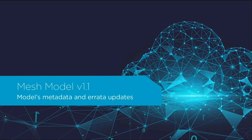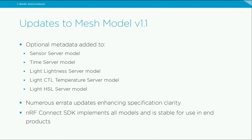Looking at updates in Mesh model specification version 1.1: the only new feature in the revised model spec is addition of optional metadata to some server models. This metadata helps identify certain read-only properties such as range settings for lighting-related models. The updated version also includes numerous errata updates clarifying several functional aspects of the models. The NRF Connect SDK implements all models of the Mesh model spec including all errata clarifications.